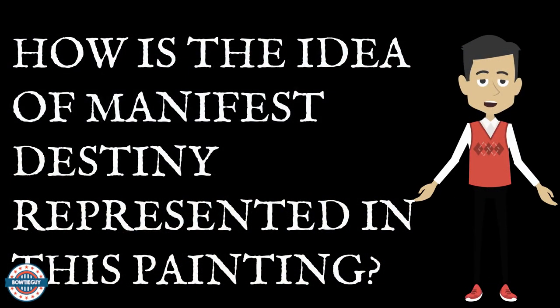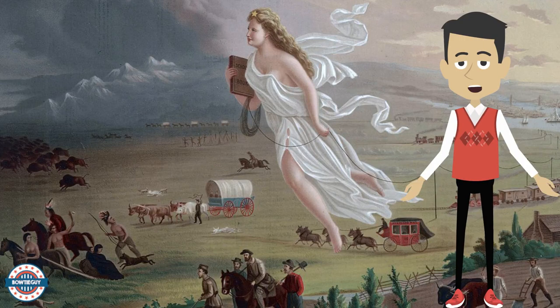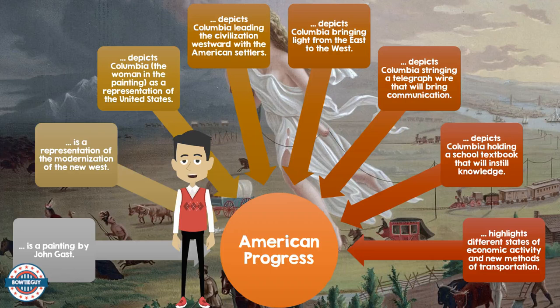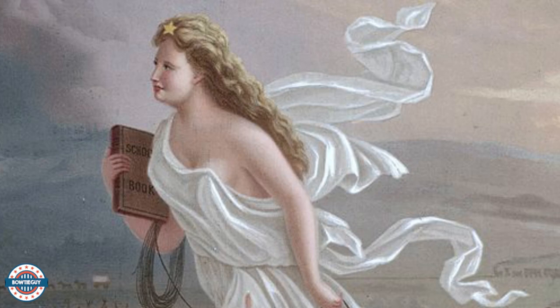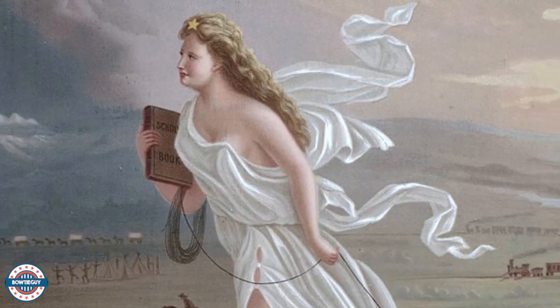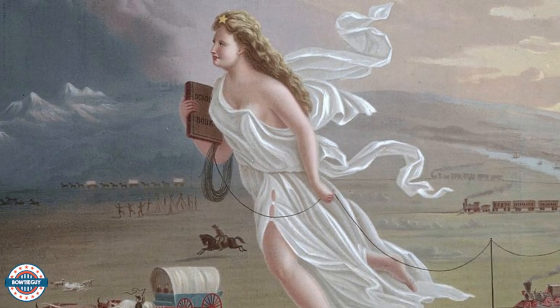How is the idea of Manifest Destiny represented in this painting? Well, this painting is entitled American Progress. It's a painting by John Gast. It is a representation of the modernization of the New West. It depicts Columbia, the woman in the painting, as a representation of the United States. It depicts Columbia leading the civilization westward with the American settlers. She's bringing light from the east to the west.